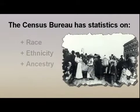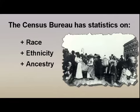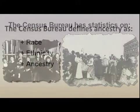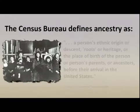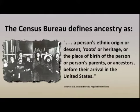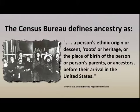The Census Bureau has statistics on race, ethnicity, and ancestry. For this tutorial, we will focus only on ancestry. So let us begin by finding out how the Census Bureau defines ancestry. The Census Bureau defines ancestry as a person's ethnic origin or descent, roots or heritage, or the place of birth of the person or the person's parents or ancestors before their arrival in the United States. Now that we have an understanding of how the Census Bureau defines ancestry, we can start our search for ancestry data.